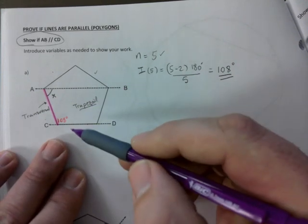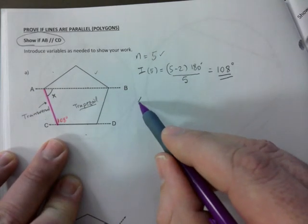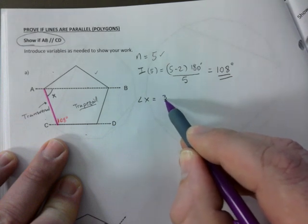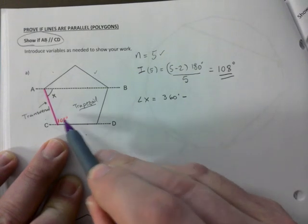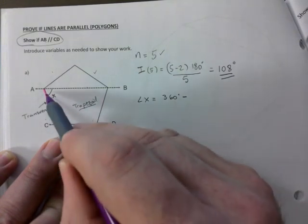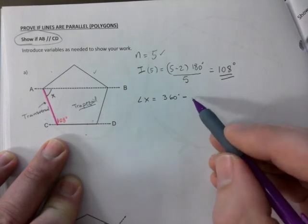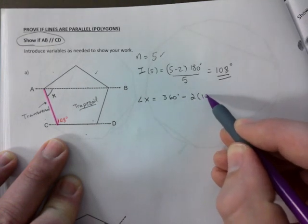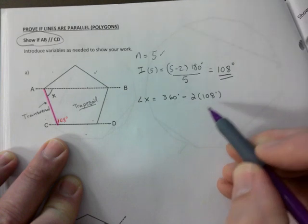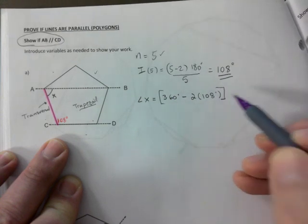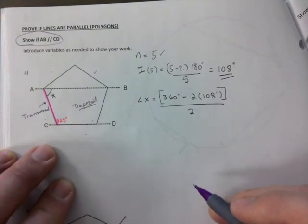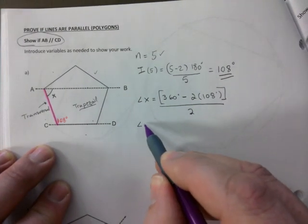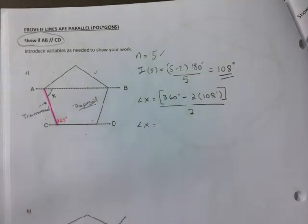So let's call this angle X. What is this here? This is a trapezoid, right? And I saw this trapezoid. So how do we find angle X? 360 minus how many interior angles does this trapezoid have? Two interior, right. Minus two times 108, all of that divided by two.